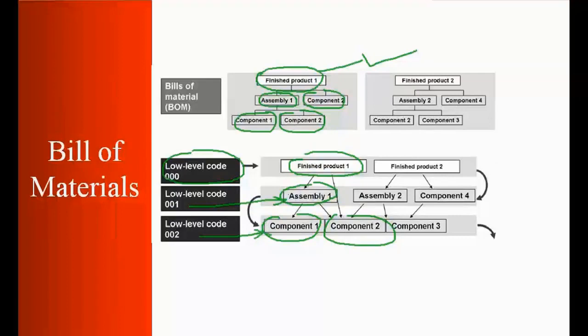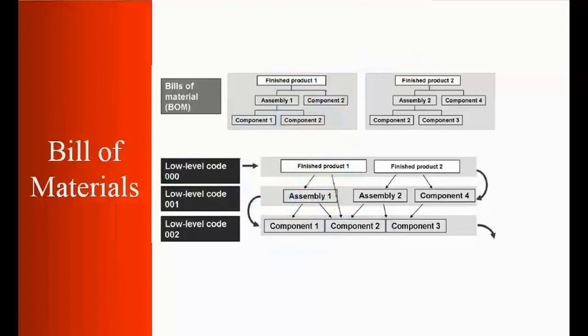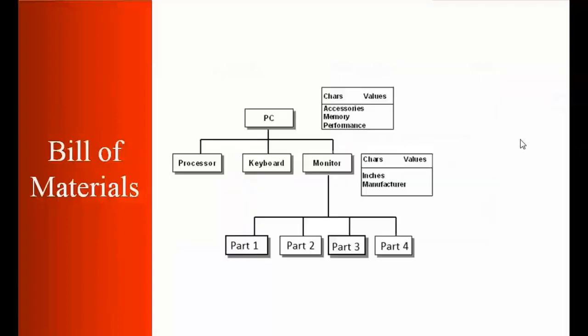So this is Bill of Material. Now we'll take another example. If you look at this screen, think about a company who is manufacturing a PC or maybe a laptop. To make the PC, what are the different requirements? If the company wants to make a PC, they need a processor, they need a keyboard, they need a monitor.